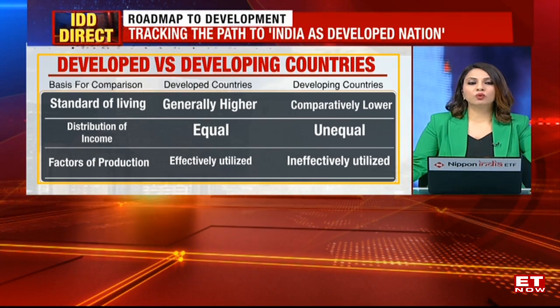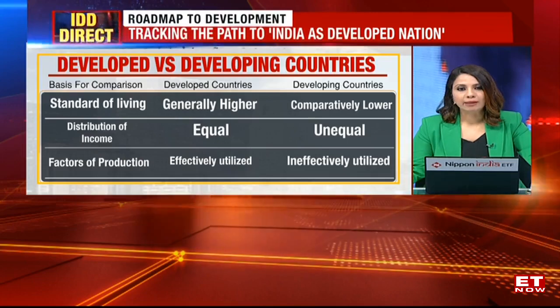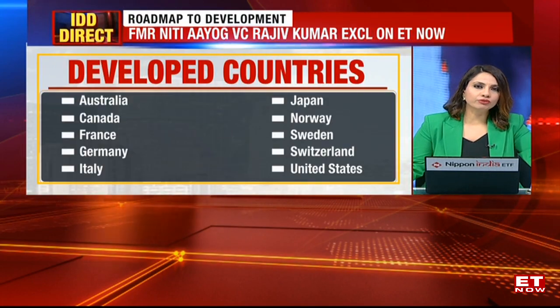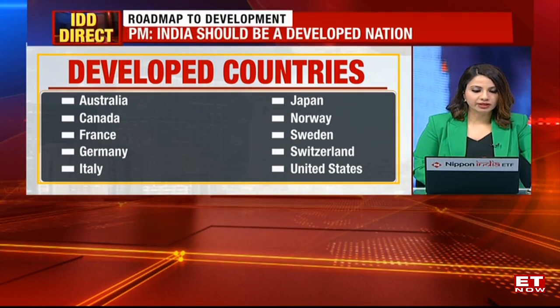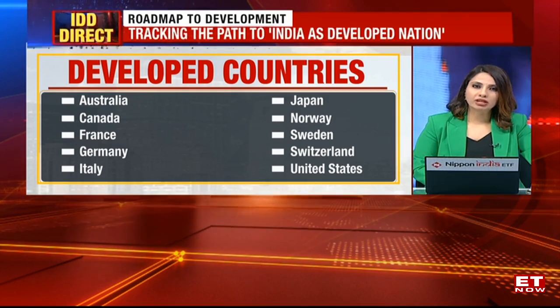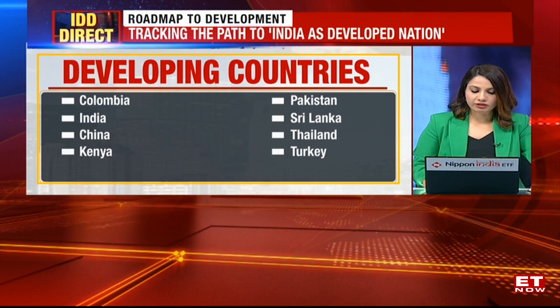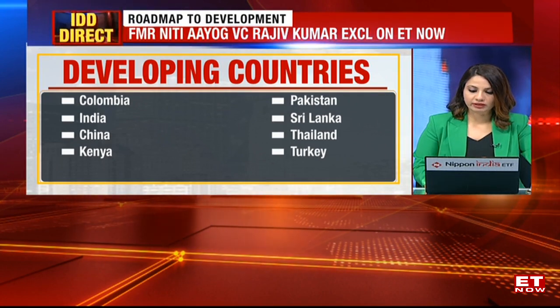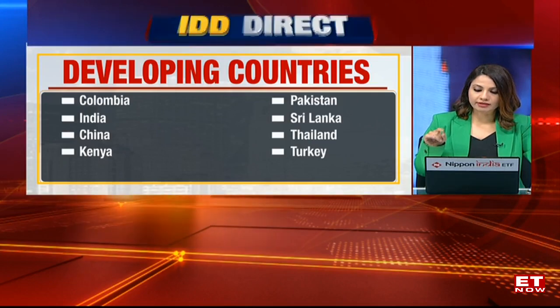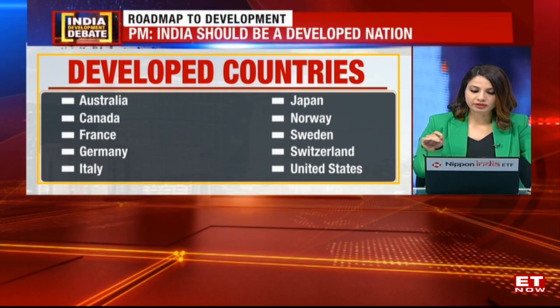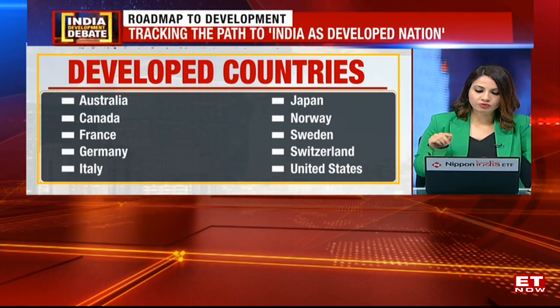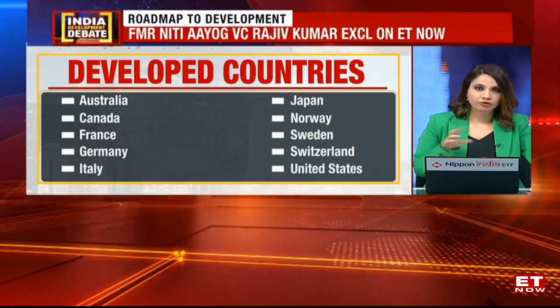Just to give you a sense of what it means to be a developed nation — the distribution of income is also a very important parameter that separates a developing nation from a developed nation, and this is perhaps one of the big challenges India will be facing. The World Bank currently categorizes India as a lower middle income economy, meant for countries with a gross national income per capita of between $1,086 and $4,255 per year.